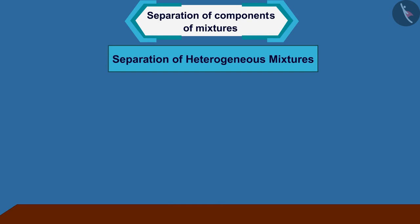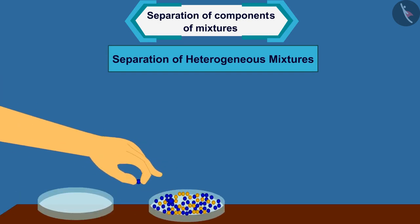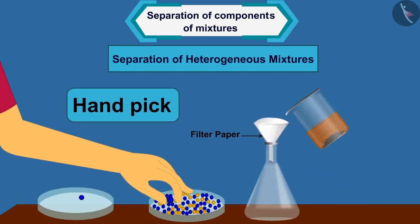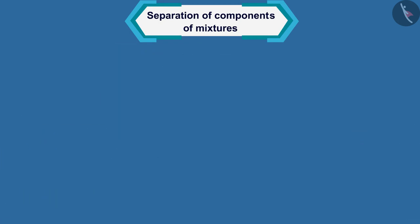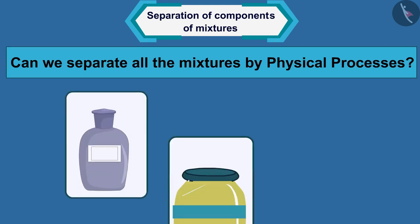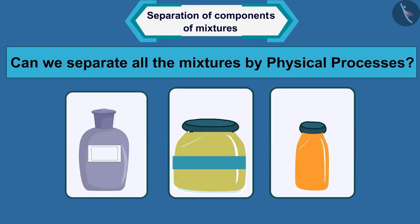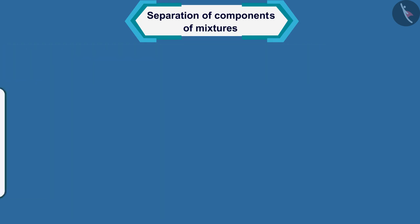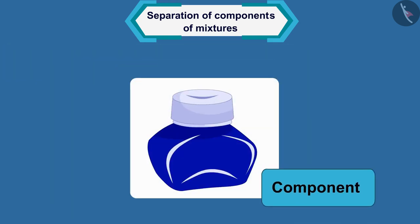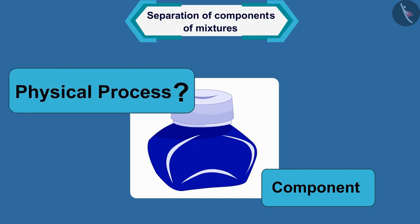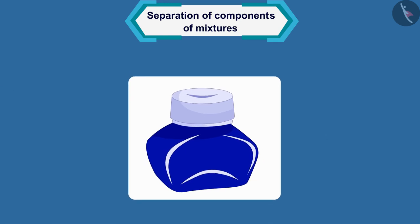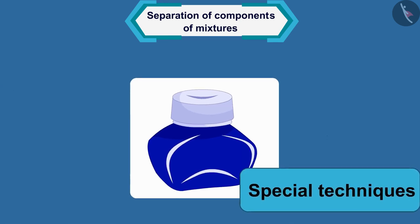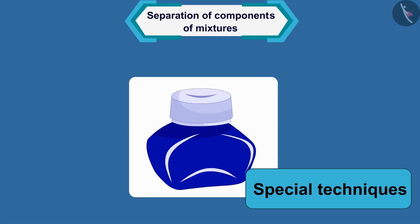The heterogeneous mixture can be separated by simple physical processes such as selecting by hand, filtering and sieving. But can we separate all mixtures by physical processes? For example, can we separate ink into its components by some physical process? No. Special techniques are used to separate mixtures such as ink. Let us now study some of these techniques.